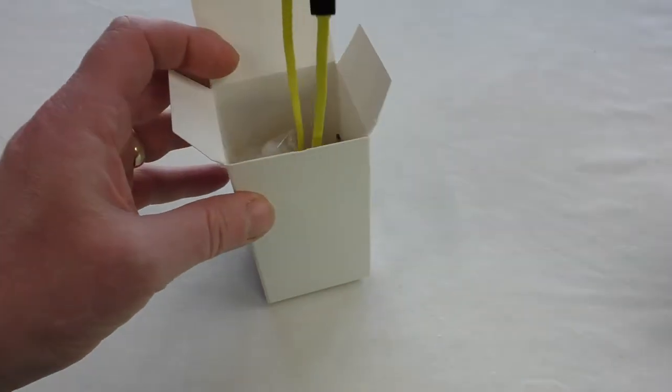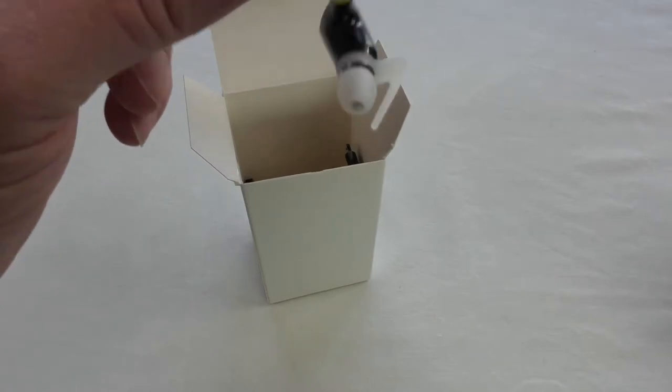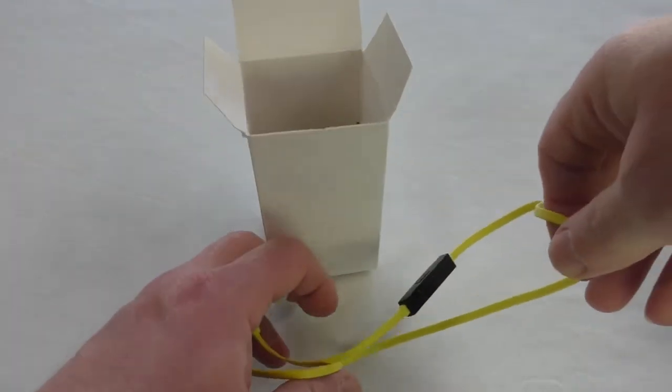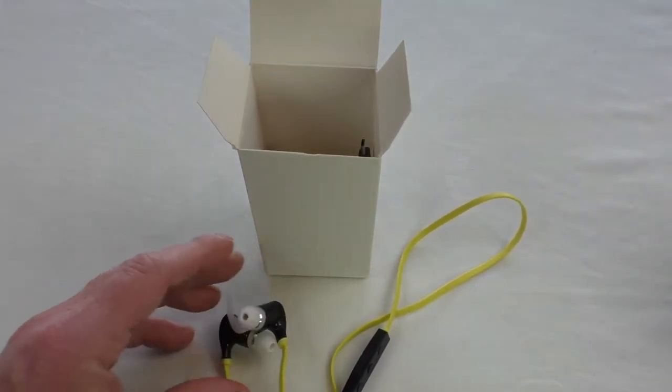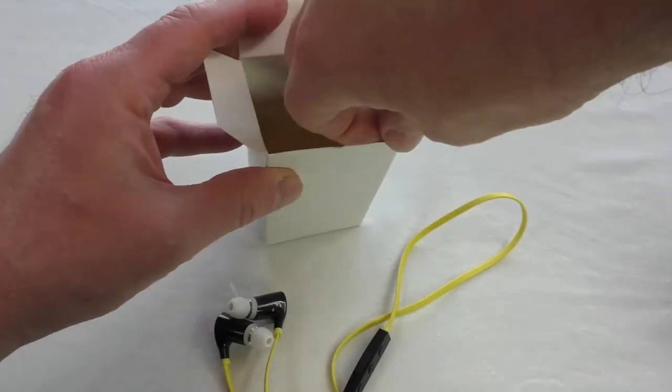So you get the earphones themselves which have a nice anti-tangle cable. Let's look a bit further, we'll show you what else we get in the box.